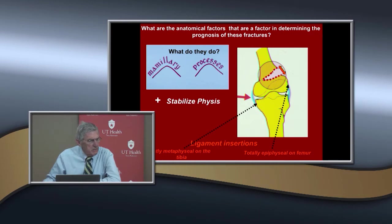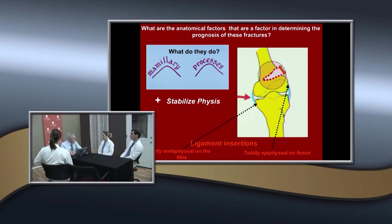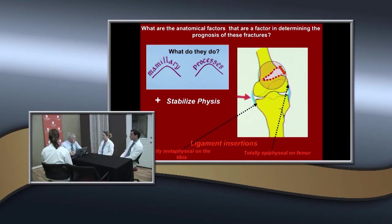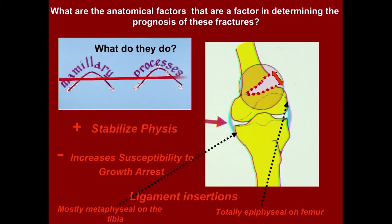What's the downside of mammillary processes? They can get disrupted during a fracture. Why do we see growth arrest here more than in other physeal fractures? Because of the mammillary processes, there's a higher incidence of the fracture line going through the resting or growth stage of the physis rather than through the hypertrophic stage.